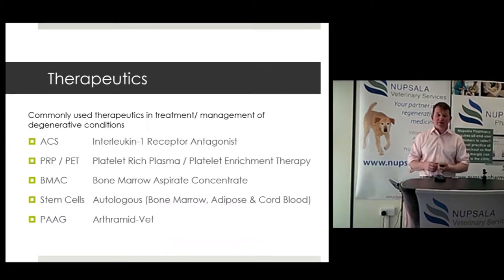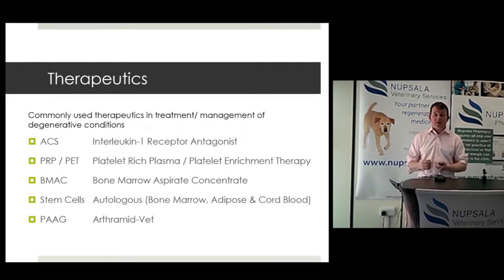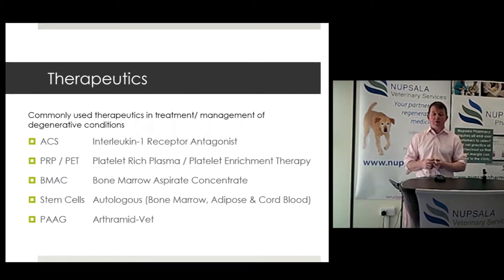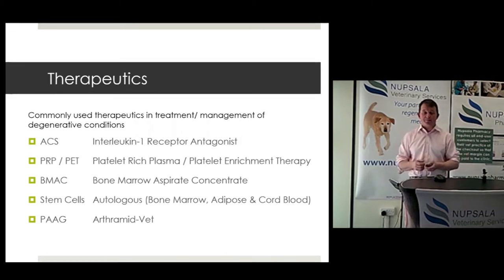The therapeutics we'll run through are: ACS — sometimes known as IRAP, the autologous conditioned serum — PRP (platelet-rich plasma or platelet enrichment therapy), bone marrow aspirate concentrates, stem cells, and polyacrylamide.